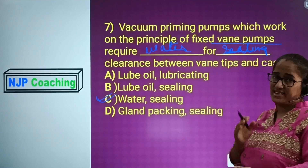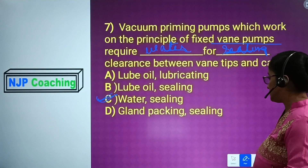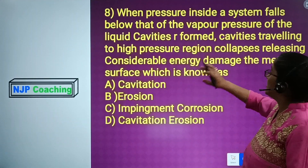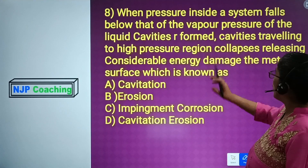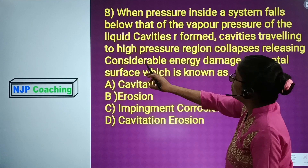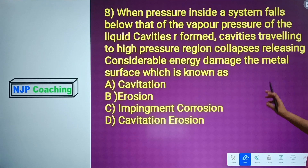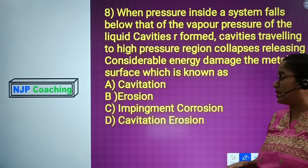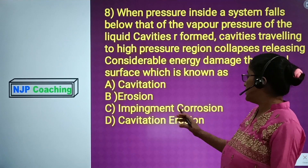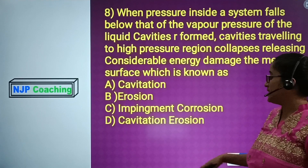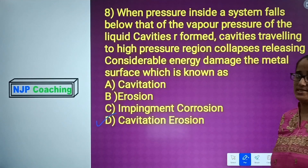Question number 8: When oil pressure inside a system falls below that of the vapor pressure of the liquid, cavities are formed. The cavities travel to a high pressure region and collapse, releasing considerable energy, which damages the metal surface. This phenomenon is known as: A) Cavitation, B) Erosion, C) Impingement Corrosion, D) Cavitation Erosion. The correct answer is D — Cavitation Erosion.